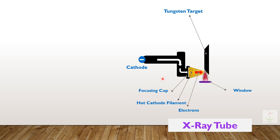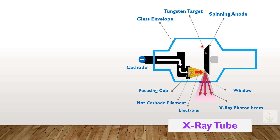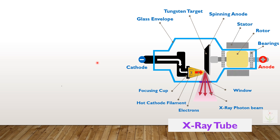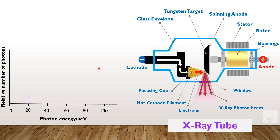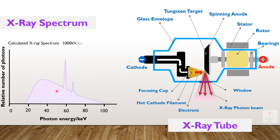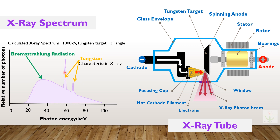In the X-ray tube, when a highly energetic electron strikes the material surface it results in the production of X-rays. When we plot the energy of the X-rays with respect to their relative number, we get the X-ray spectrum as shown in this diagram. The sharp peaks belong to the characteristics X-rays, and the continuous part belongs to the Bremsstrahlung radiations.